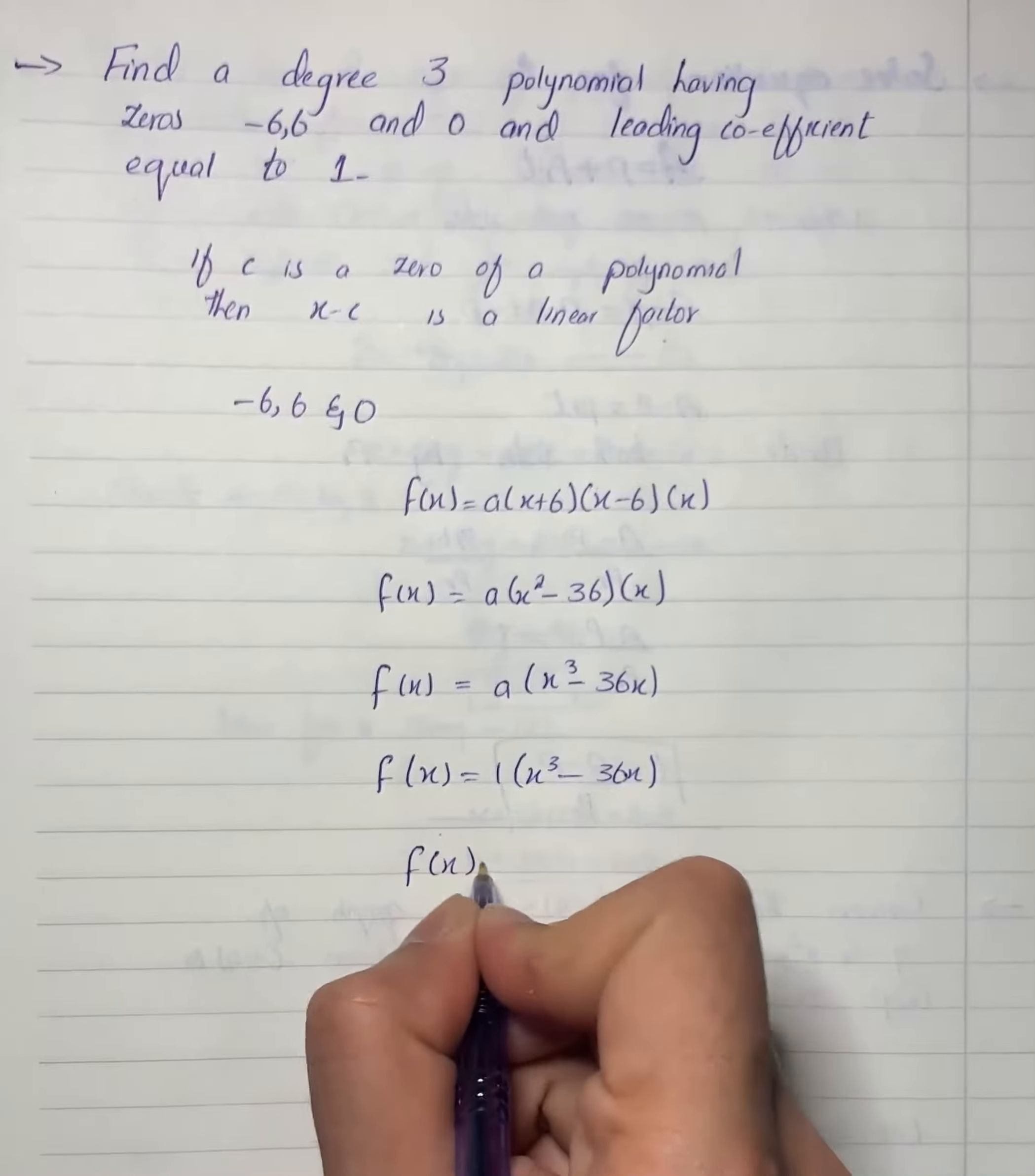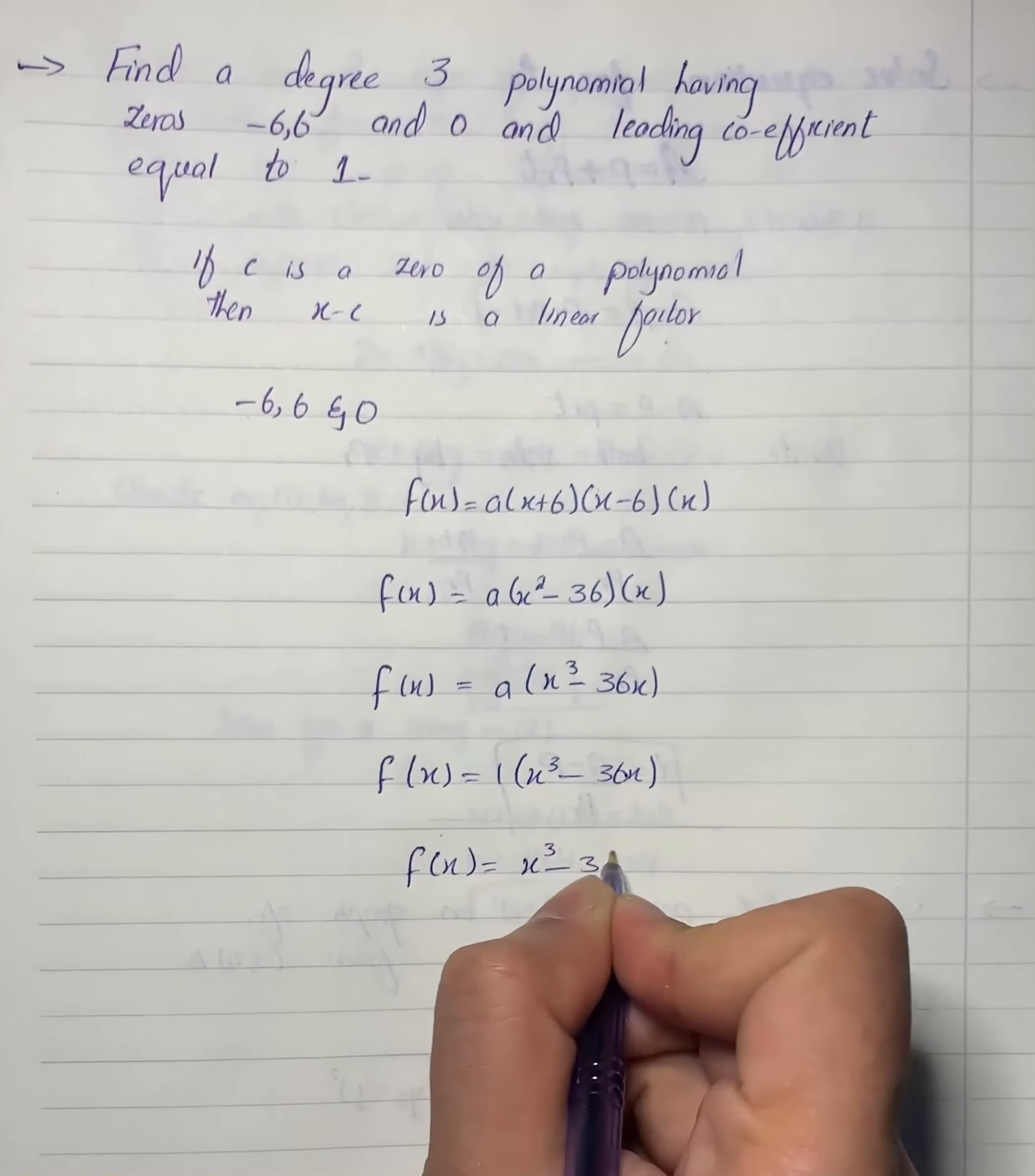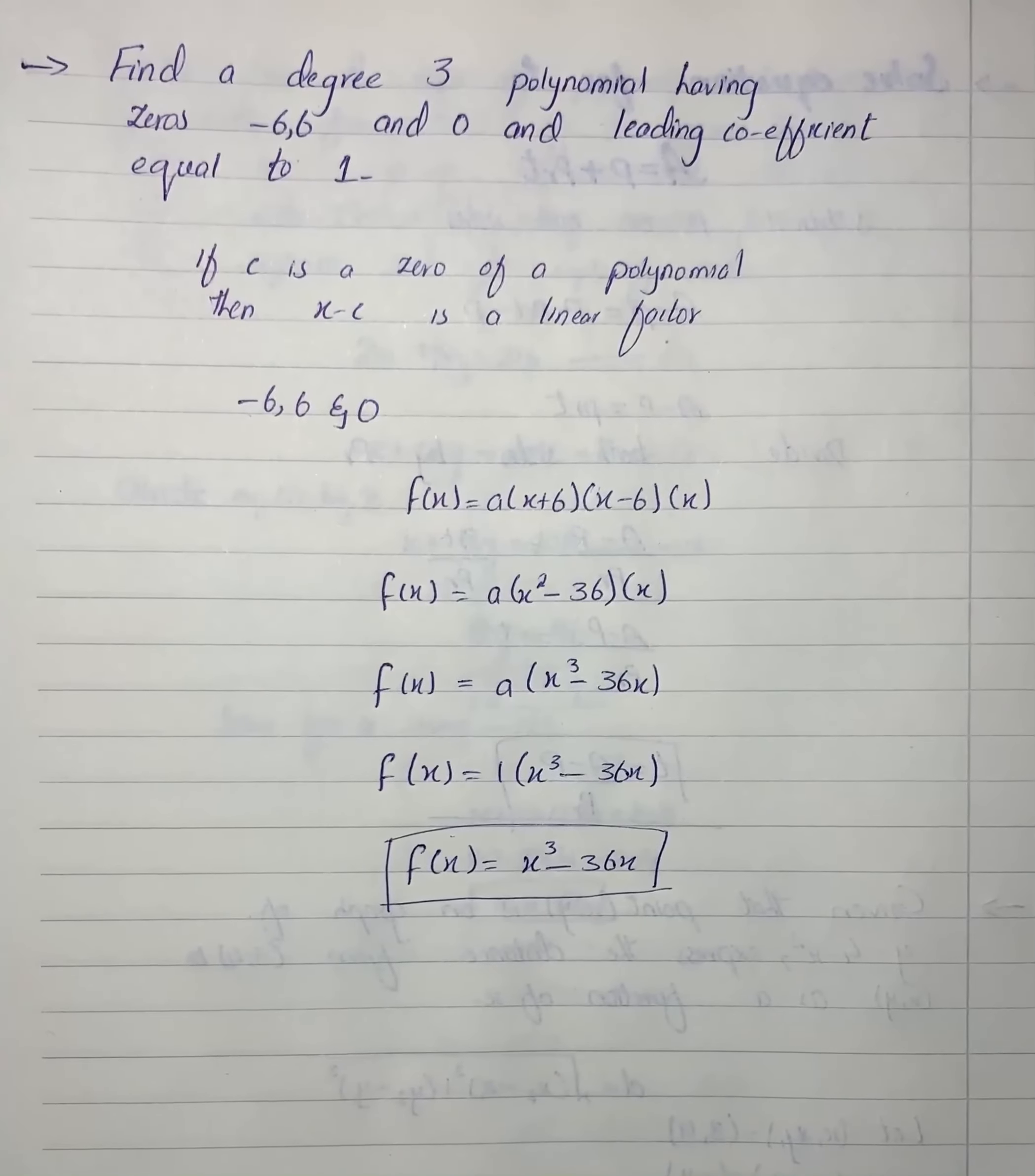So the function we have, our value is x³ - 36x. Here is your desired solution for the question.